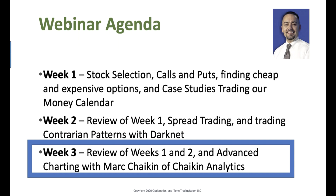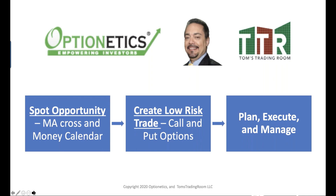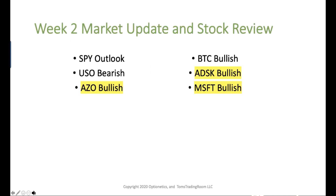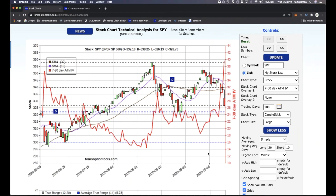Let's talk about week three. I want to do a quick review of weeks one and two, get into the handful of stocks we talked about last week to see where they are now, and then jump straight into advanced charting. I want to cover spotting opportunity, creating low-risk trades, and planning, executing, and managing those trades. We'll look at SPY, Bitcoin, USO bearish, and the three stocks we examined as spread trades.